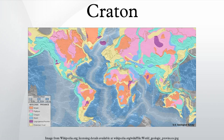Accordingly, cratonic mantle roots are probably composed of buoyantly subducted slabs of a highly depleted oceanic lithosphere. These deep mantle roots increase the stability, anchoring and survivability of cratons. This makes them much less susceptible to tectonic thickening by collisions, or destruction by sediment subduction.